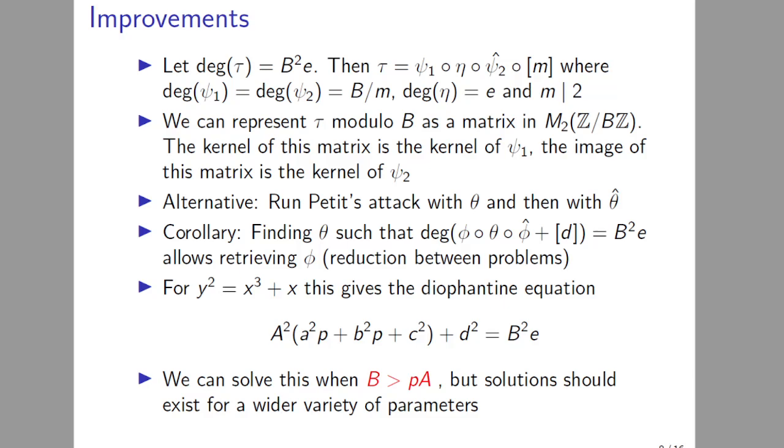We can get most of the information about τ just by looking at τ modulo B. So τ modulo B can be represented by a 2×2 matrix over Z/BZ. The kernel of this matrix is the kernel of ψ_1. This was already used in Petit's attack. But then the image of this matrix is actually the kernel of ψ_2. And m can also be recovered from this matrix representation. The only part which cannot be recovered is the η part, but that part can be recovered by a generic meet-in-the-middle algorithm. An alternative way of thinking about this attack is just running Petit's attack twice, once with θ and then with the dual of θ.